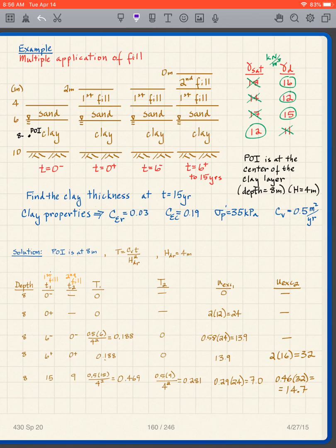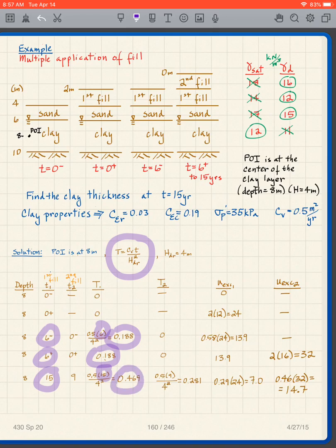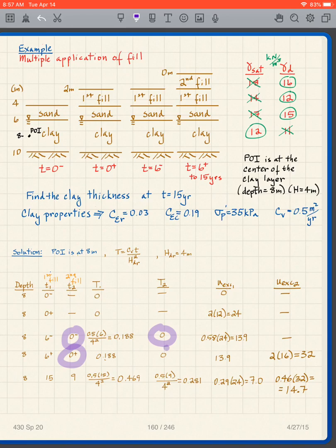t1 is going to be our normal time scale in the sense that this is what's listed here. So we have zero minus, zero plus, six minus, six plus and fifteen for that time scale. Then we're going to create another time scale that starts at six plus to fifteen years. So the second time scale t2, at six minus we call it zero minus, at six plus we call it zero plus, at fifteen years then it's only going to be nine. Associated with that we're going to create a capital T1 and a capital T2. We're going to do the same with t2, so zero minus is zero, zero plus is zero, and then we're going to use the nine to get a capital T2 of 0.281.